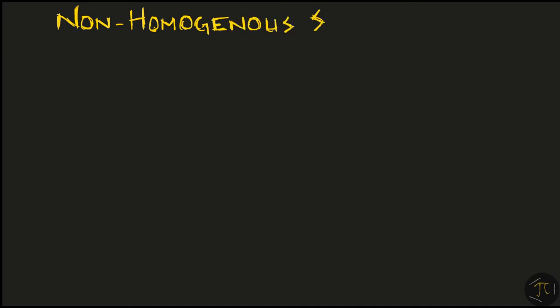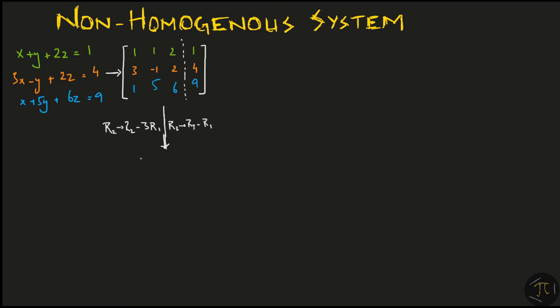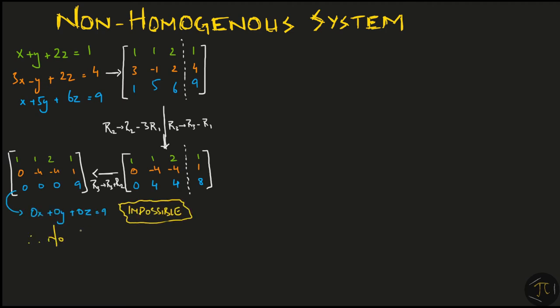Now, let's move on to a non-homogenous system. The equations are exactly the same except this time, I have replaced the zeros with some non-zero numbers. We carry out the exact same row operations because the coefficient matrix did not change. But this time, the last equation turns out to be 0x plus 0y plus 0z equal to 9 which is impossible for any value of x, y and z. So, we say that this system has no solution.